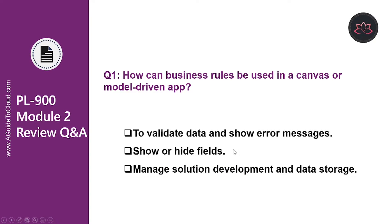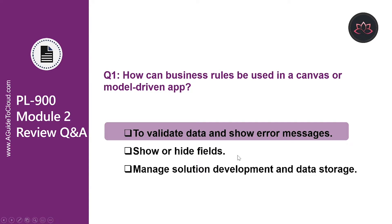Let's look at the first question. How can business rules be used in a Canvas or Model-driven app? Is it to manage solution development and data storage? No. Is it to show or hide fields? Definitely not. So the correct answer is to validate data and show error messages.